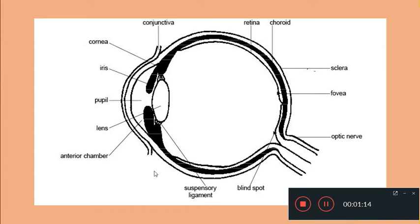Now coming to the anterior region of the eye — in the exposed portion of the eye, the sclera is transparent, and this transparent sclera at the exposed portion of the eye is called as the cornea. Now the cornea is covered over by a transparent membrane which is called as conjunctiva.